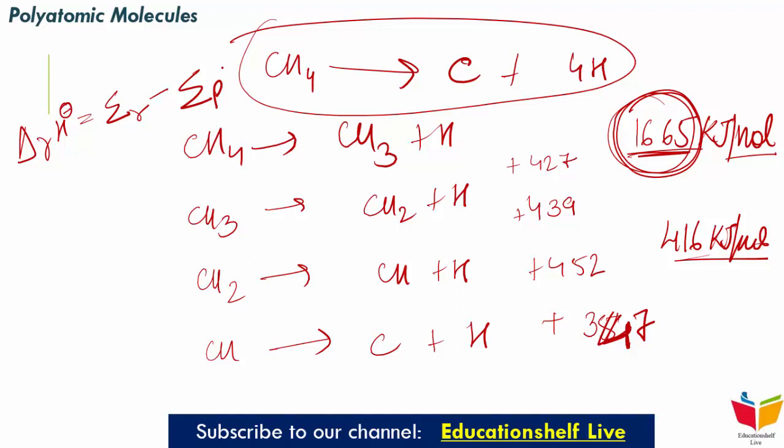The net enthalpy change of a reaction is the energy required to break all bonds in the reactant molecules minus the energy required to break all bonds in the product molecules. This relationship is approximate and is valid only when all substances — both reactants and products — are in the gaseous state.